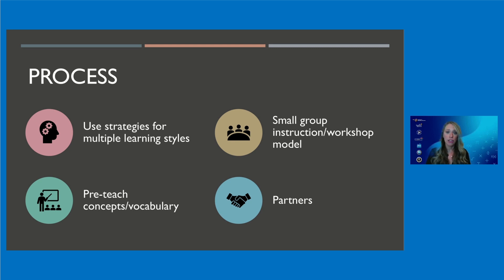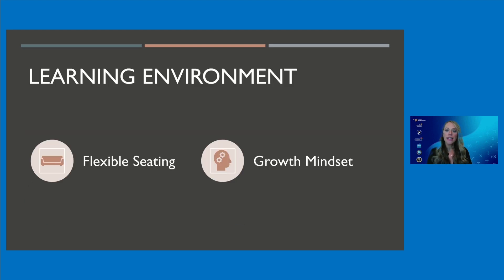While there are many strategies to differentiate process, hopefully these are an easy springboard to get you started differentiating. Now let's talk about learning environment — or how the learning is structured. I pride myself on having a positive classroom environment. In my classroom, there are two big ways that I differentiate the learning environment that contribute to this encouraging atmosphere: flexible seating and using a growth mindset.